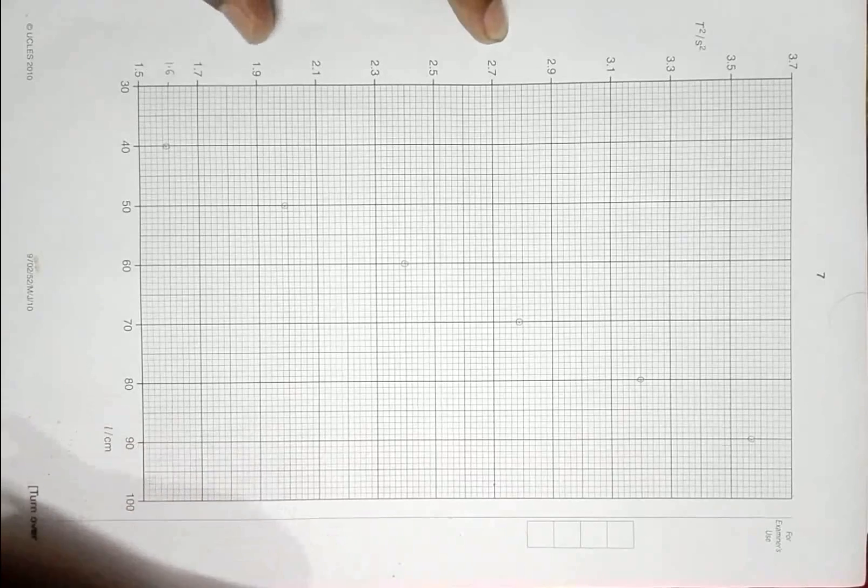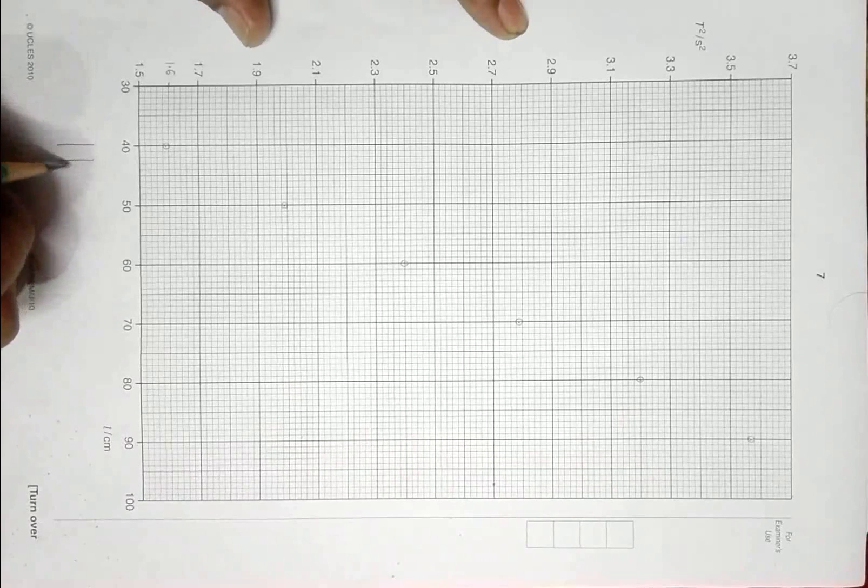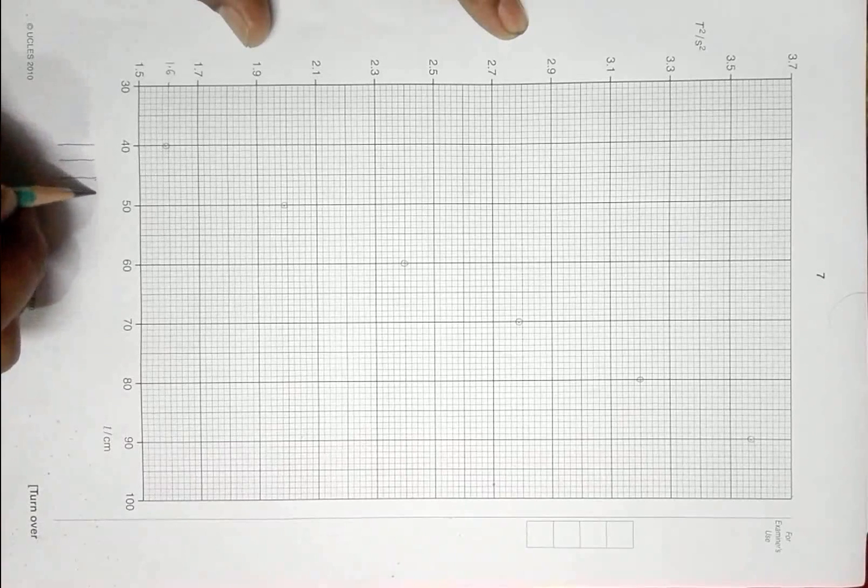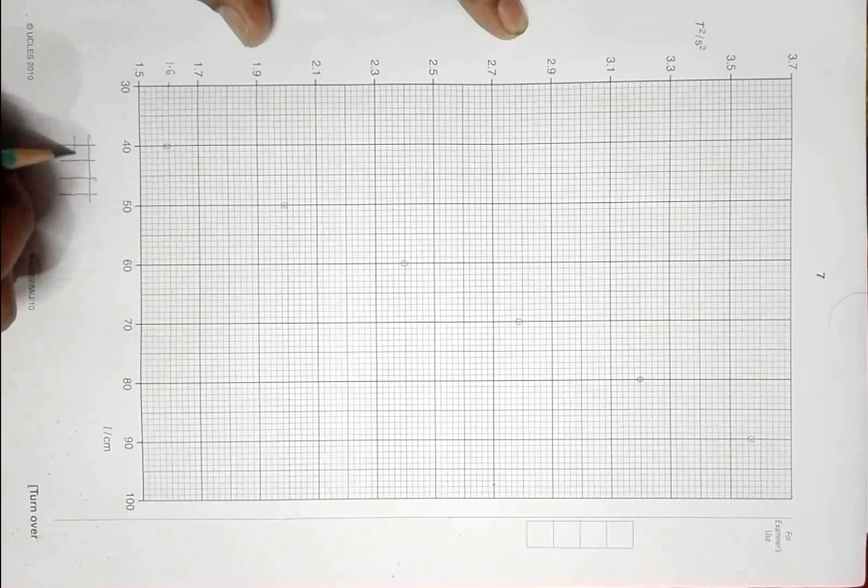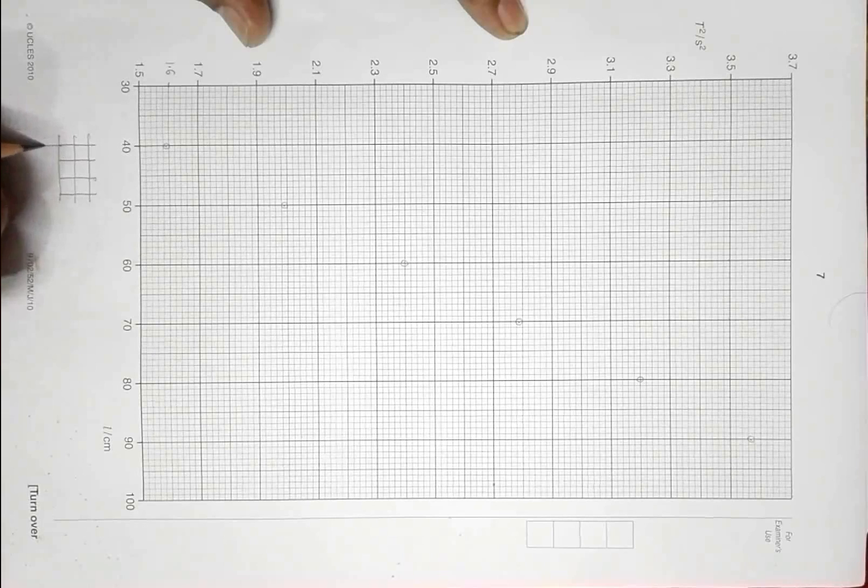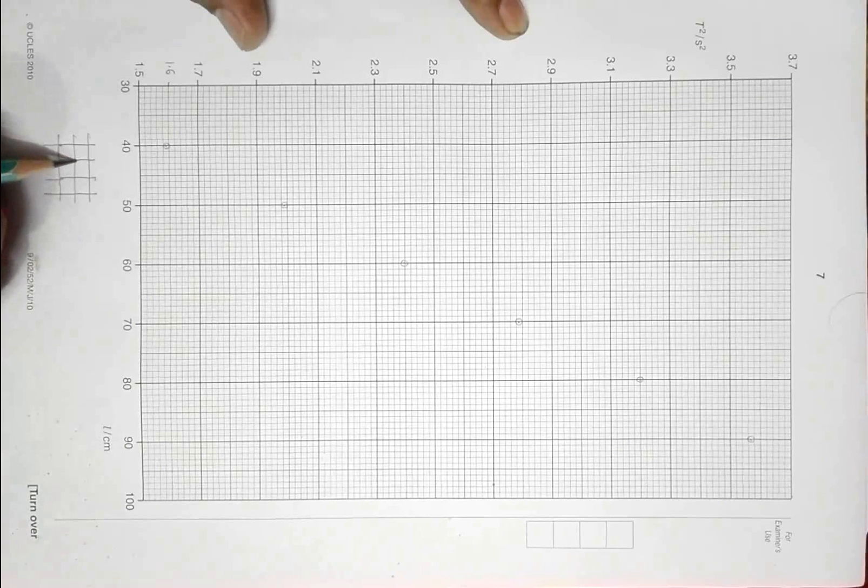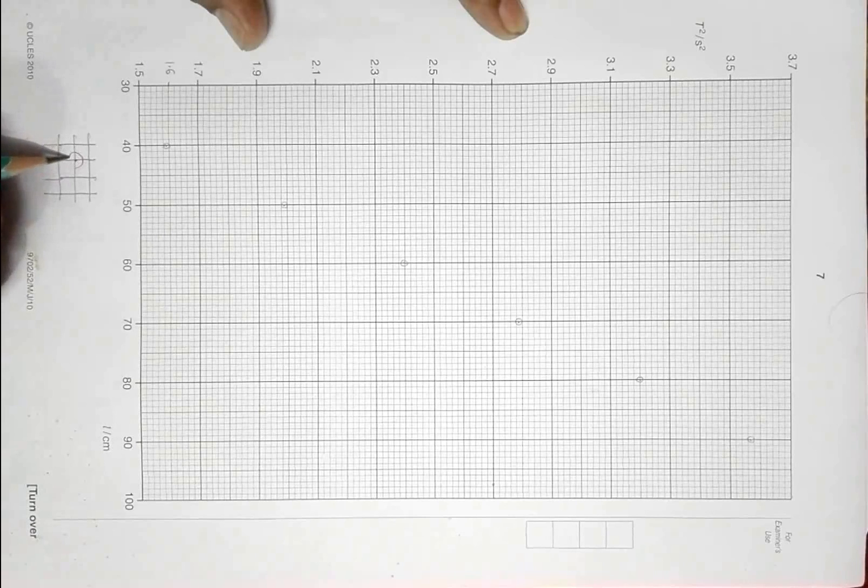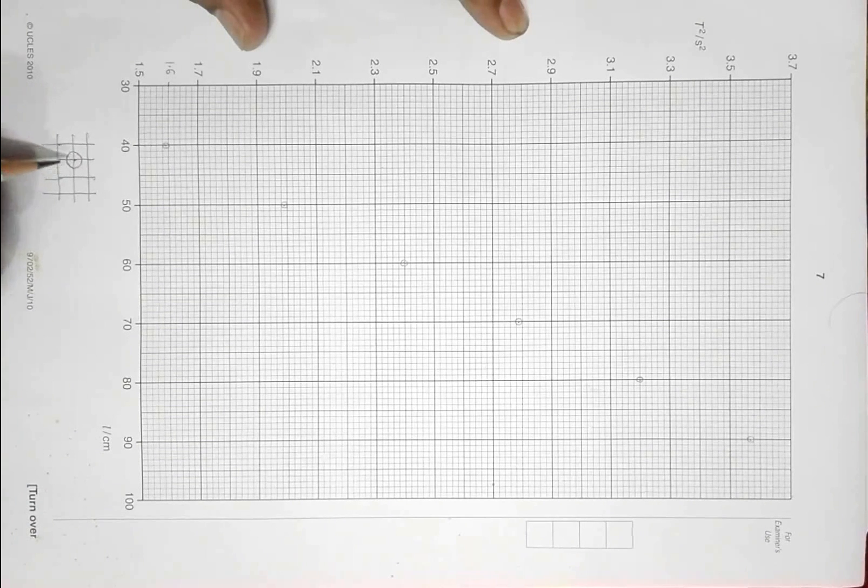Now one thing you have to remember while plotting is the radius of the circle. If I have got two divisions like this, these are the boxes, I can also extend like this. What you should be taking care of is that the size of the circle should be about half of the least count or smallest division.